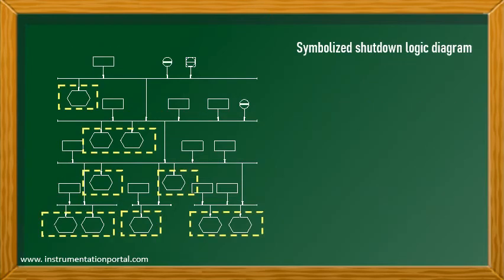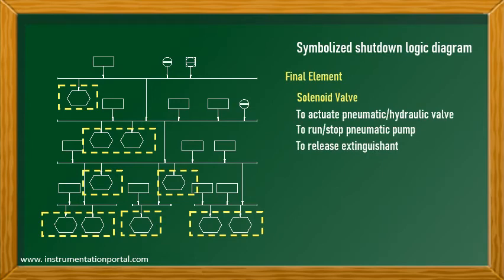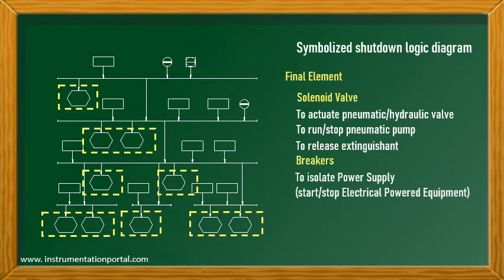The hexagon is an output, or an action that needs to be performed by the SIS. These can be solenoid valves to actuate pneumatic or hydraulic valves, to run or stop a pump, and to release extinguishing agents. A breaker to isolate power supply for starting or stopping electrically powered equipment. Alarms such as visual alarms or beacons and sounders. And interlocks.